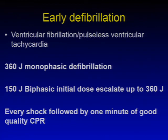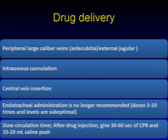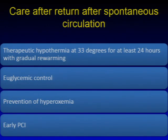Early defibrillation is key: 360 joules for monophasic, 150 joules initial dose (escalating to 360 J) for biphasic defibrillation. Every shock should be followed by one minute of good quality CPR. Drug delivery can be via peripheral large-caliber veins such as antecubital or external jugular, intraosseous cannulation in difficult access, or central vein as soon as possible. Endotracheal drug administration is no longer recommended. Recognize slow circulation time after injection; give 30–60 seconds of CPR to improve drug delivery, and a 10–20 ml saline flush can also be used.